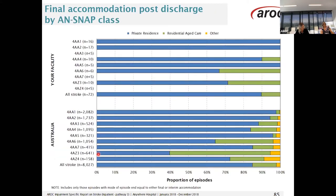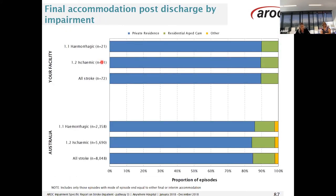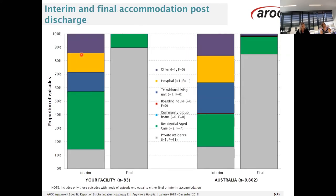Now we are looking at the breakdown of final accommodation by ANSNAP class — the majority of episodes are discharged to private residence as shown in blue. The same graph is also shown looking at impairment groups. Here we are also looking at interim and final accommodation post-discharge. The legend in the middle of the graph gives the actual number of episodes for interim and final accommodation for your service. As an example, the largest proportion of episodes went to residential aged care as an interim destination — however note that it was only three episodes. It's useful in these circumstances to look at the data tables to provide context.